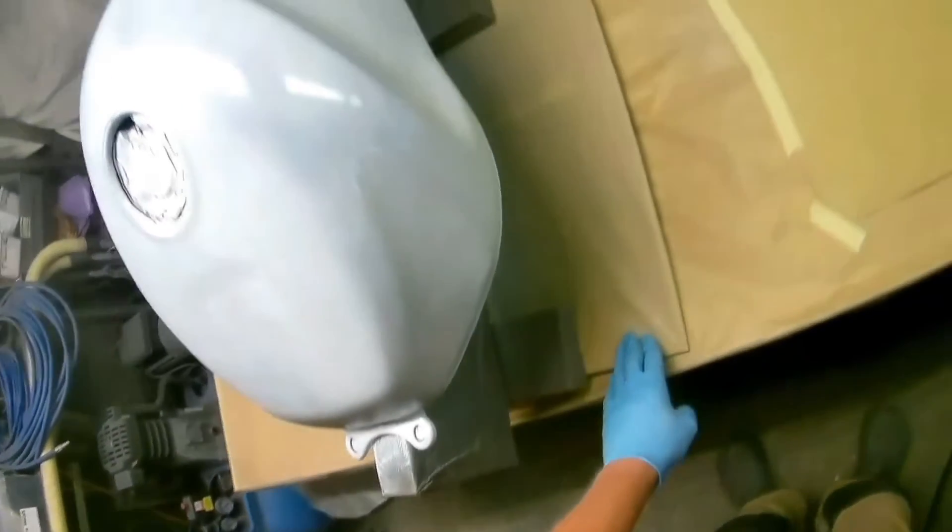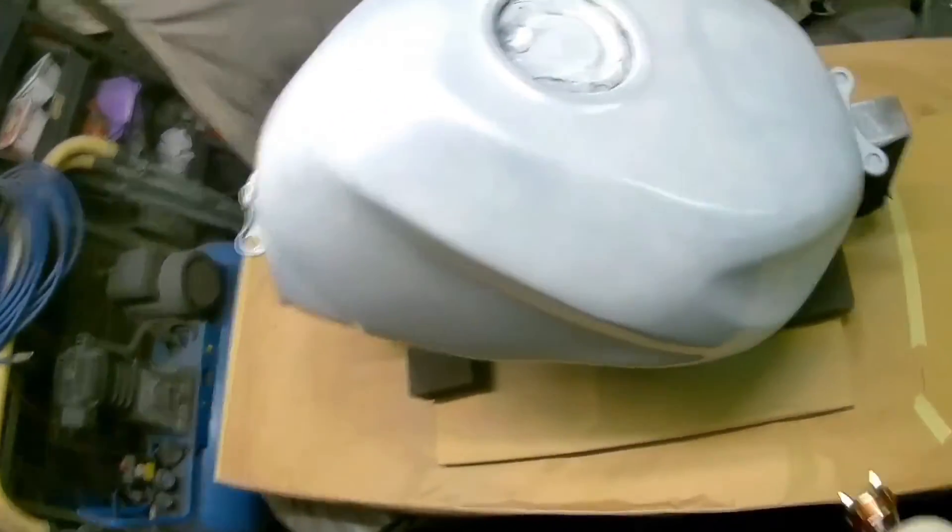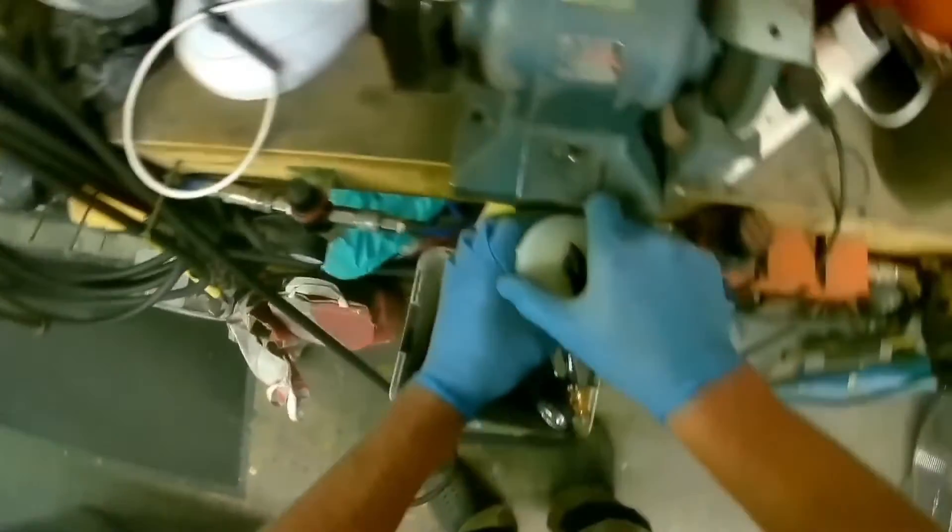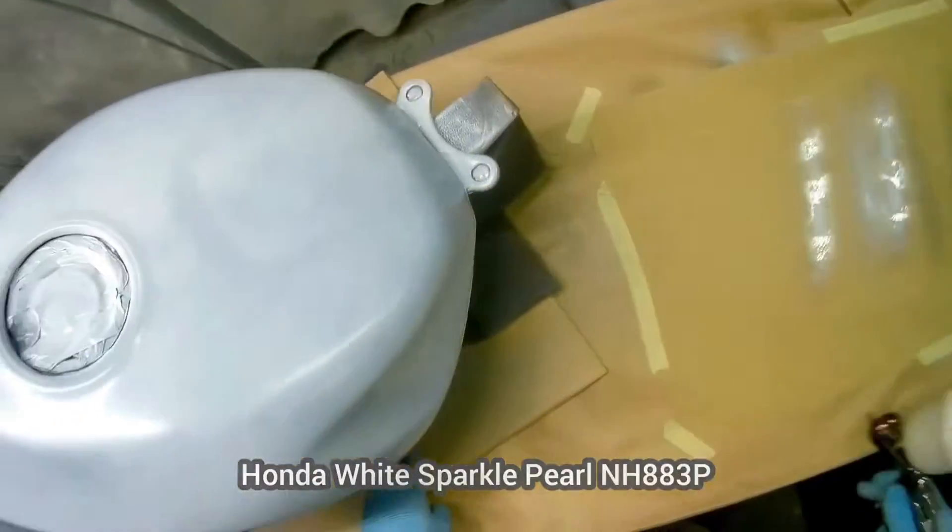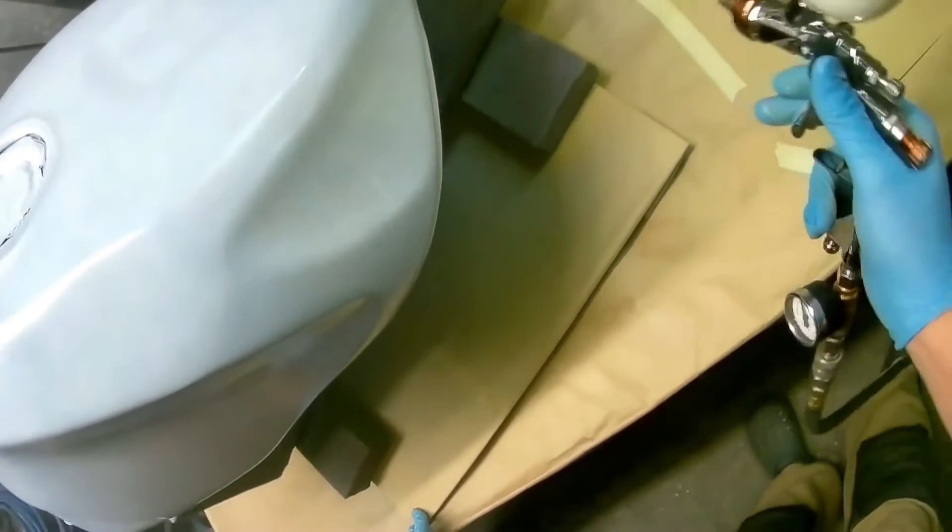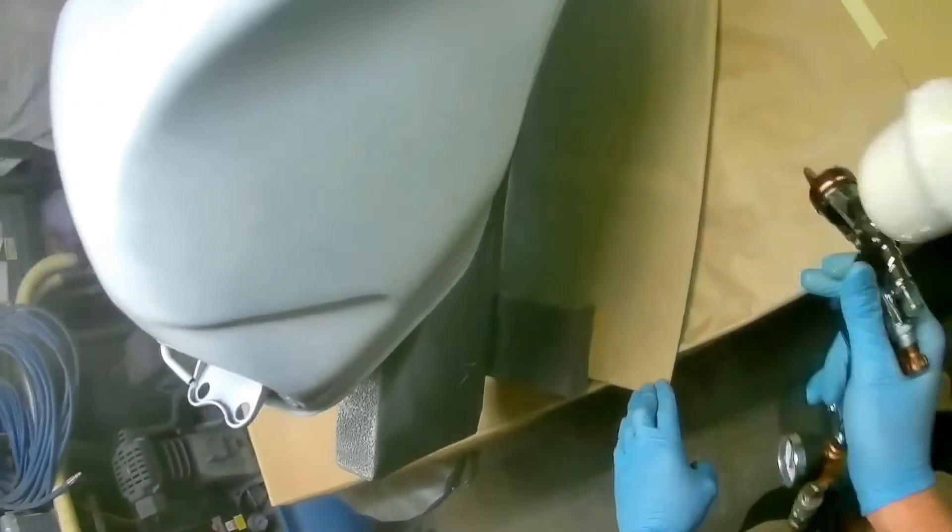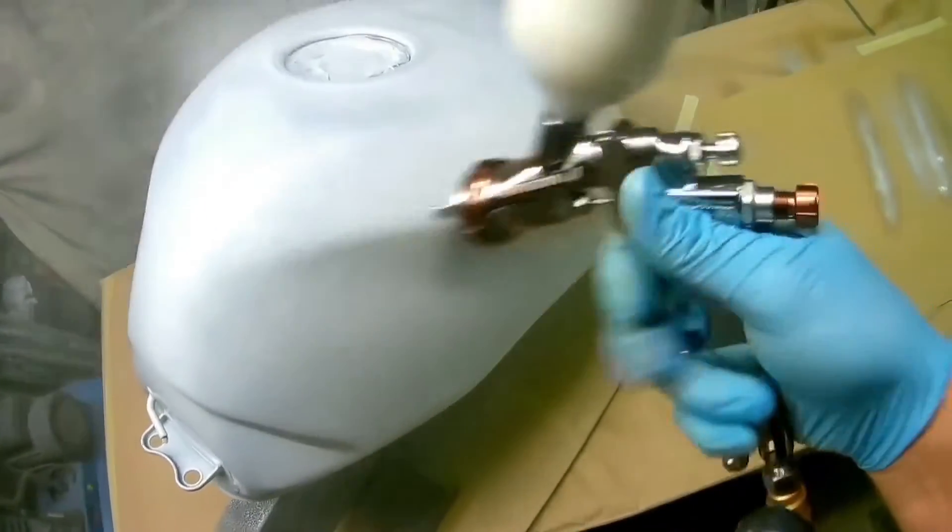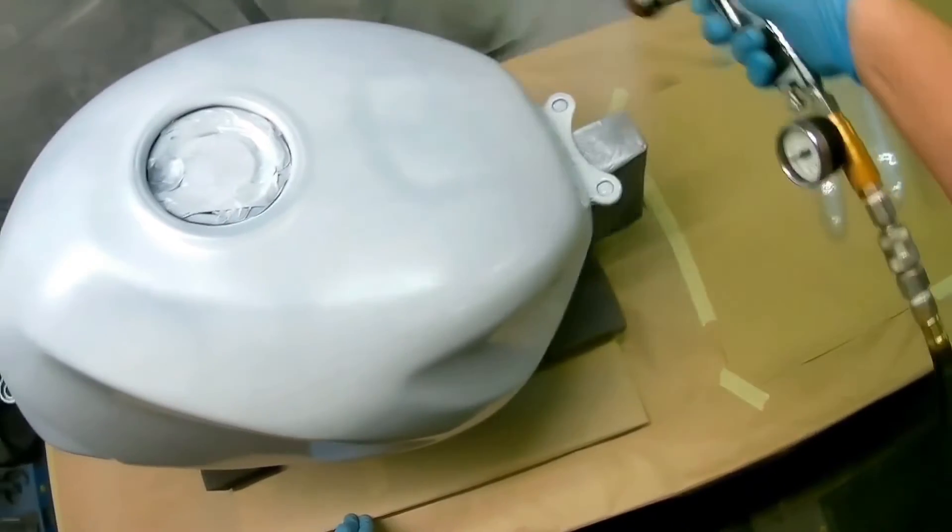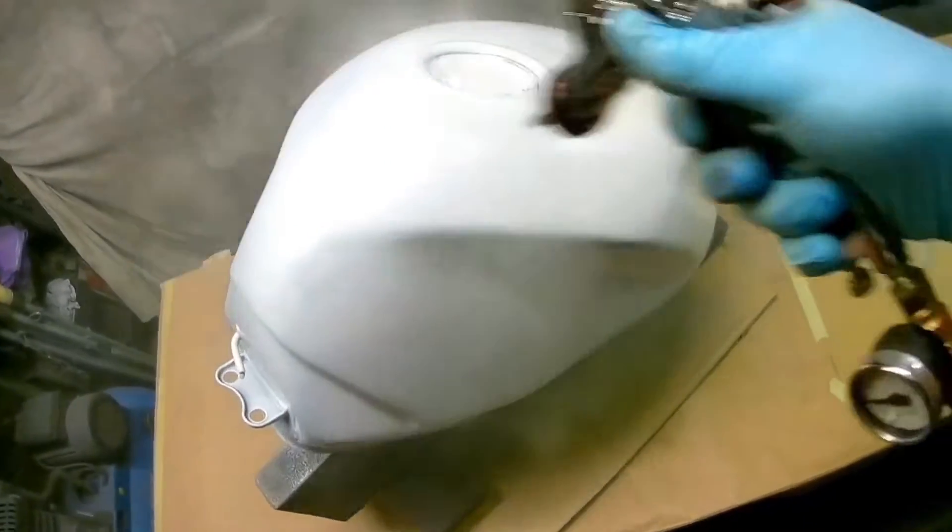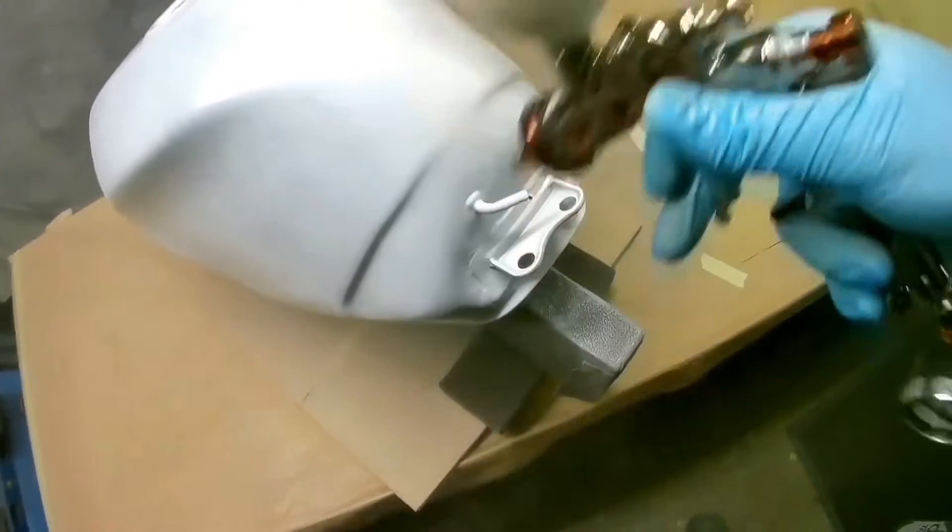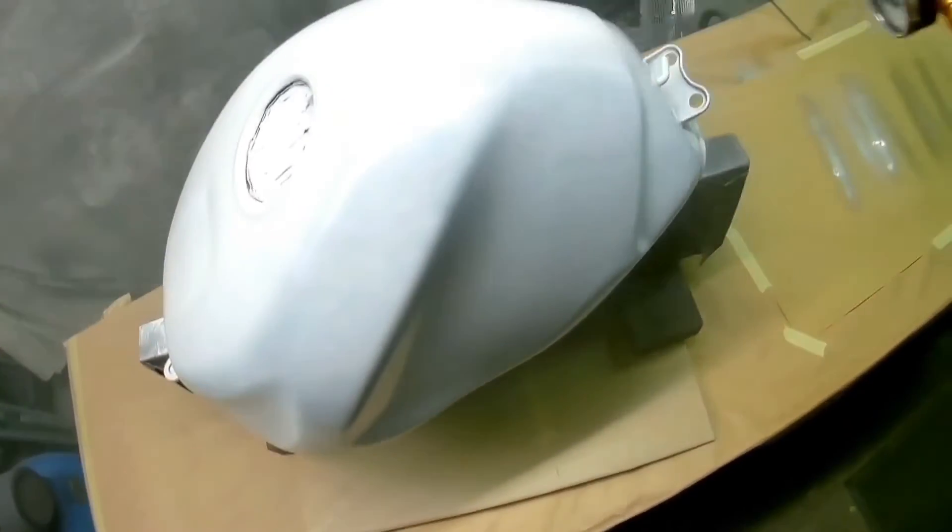And then you get the pearlescent mid-coat as it's called. And then obviously you go over it with a normal clear. And I'm only doing it because I got it by mistake. I actually ordered two litres of a different Honda colour, and they made a mistake. This one is a Honda white sparkle pearl. So I thought I'd just do this as an experiment, really, to show you guys me doing it and to use the gun, because it gives it a good workout.